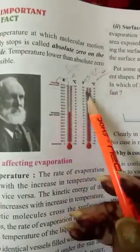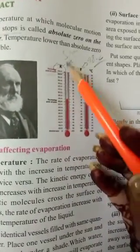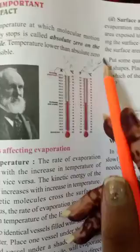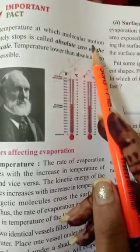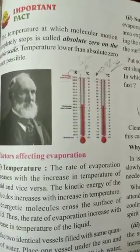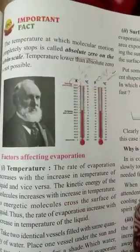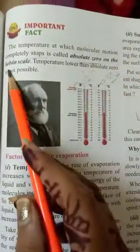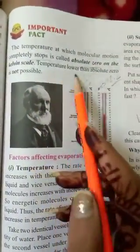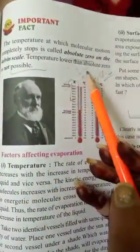In the Kelvin scale there is an upper limit and a lower limit. Kelvin is an absolute temperature scale. Absolute zero is the temperature at which the motion of molecules completely stops — that is absolute zero on the Kelvin scale. Temperature lower than absolute zero is not possible.